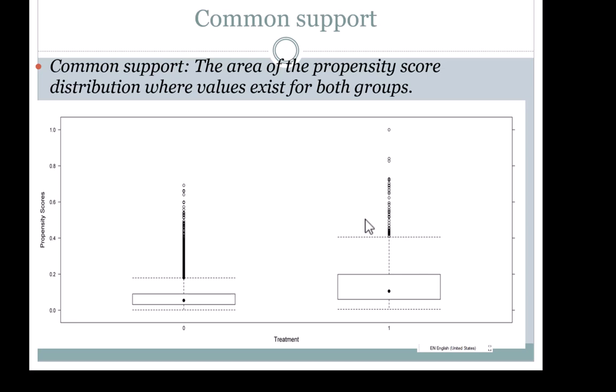Common support is a visual inspection because the common support requirement depends on how you implement the propensity score method. For example, matching may have a very specific common support requirement — you may say you will match only within, say, 0.2 standard deviations of the propensity score. Weighting doesn't have such a specific common support requirement; weighting essentially stretches the distributions, but if common support is poor you may end up with extreme weights.